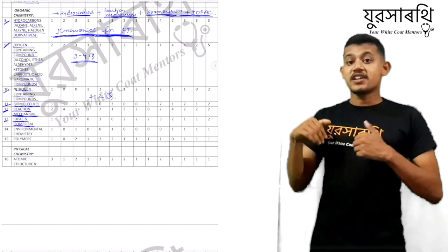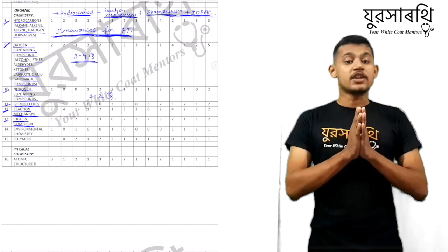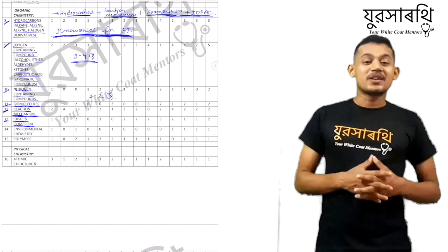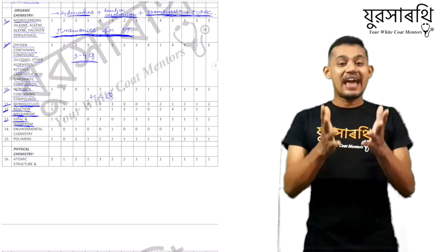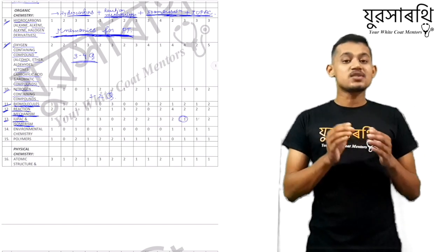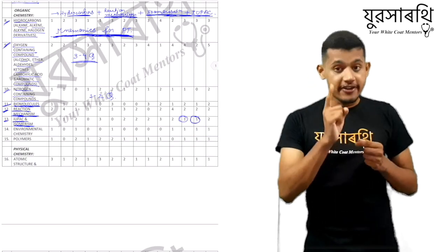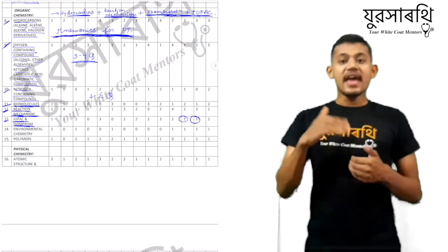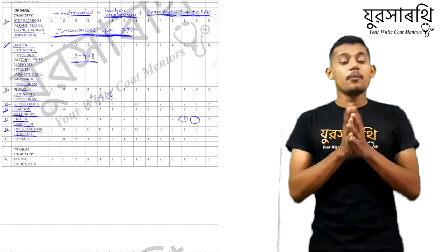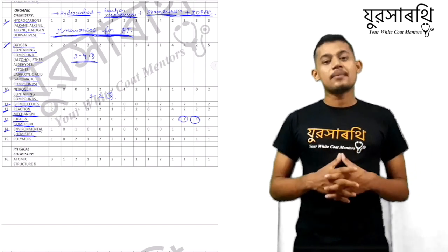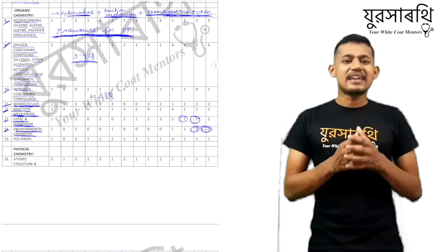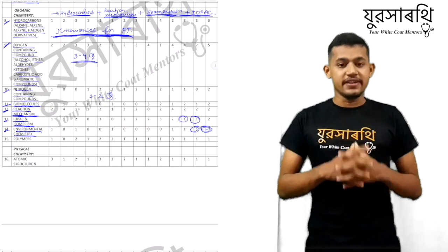After biomolecules we have reaction mechanism on the list. Reaction mechanism is the basic of organic chemistry — you have to know it and all the reaction mechanisms are equally important. Next after reaction mechanism we have IUPAC nomenclature and isomerism, and from isomerism they ask almost one question every year. Next, we have environmental chemistry, which deals with the chemistry of everyday life — it's a very easy topic and they ask one question almost every year.